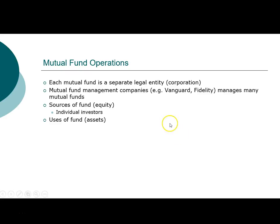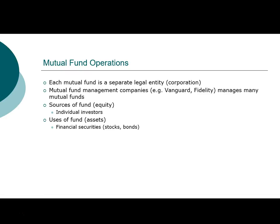Mutual funds bring investors together, and the purpose of the fund is to purchase stocks or bonds. The primary source of fund is from individual investors contributing, and the use of funds is primarily to purchase financial securities. There are different types of mutual funds, and they can purchase things in addition to traditional financial securities such as stocks and bonds.